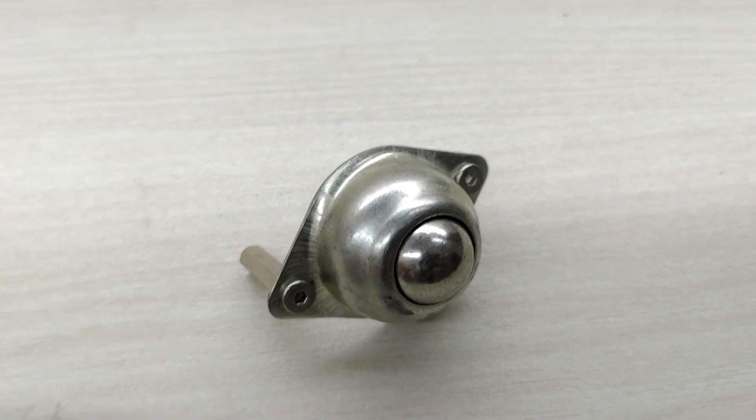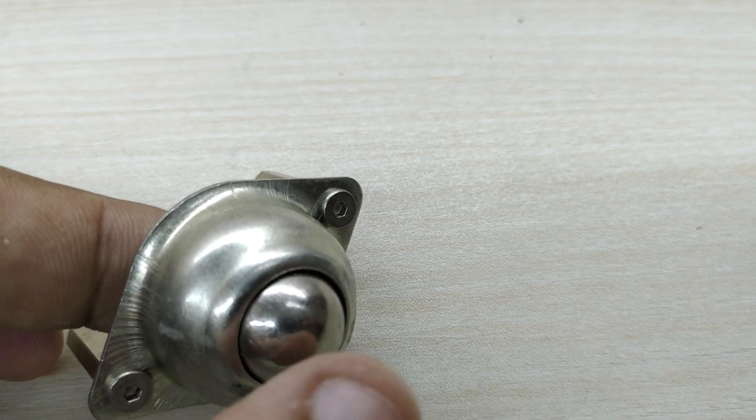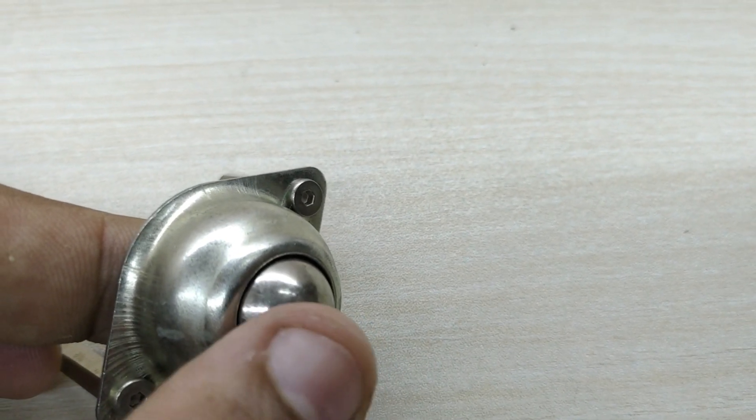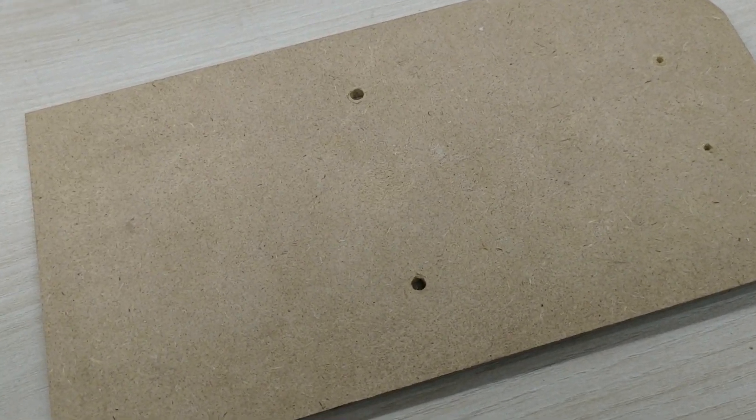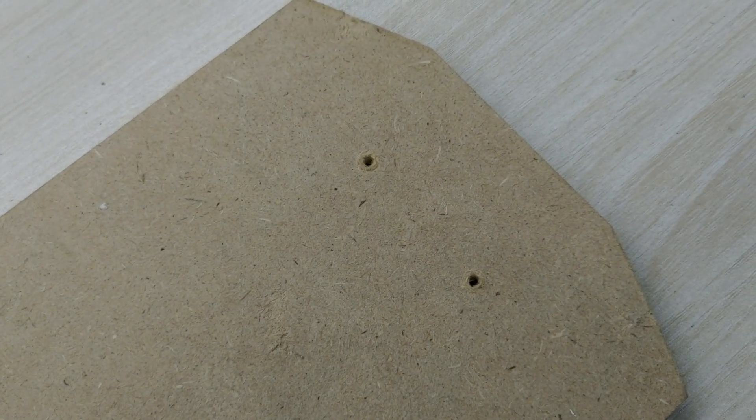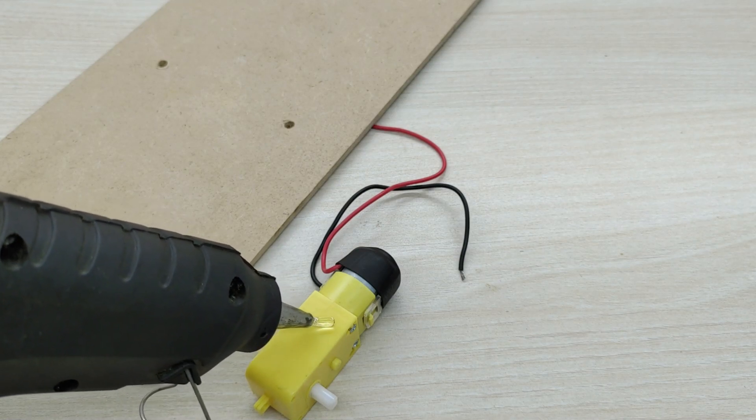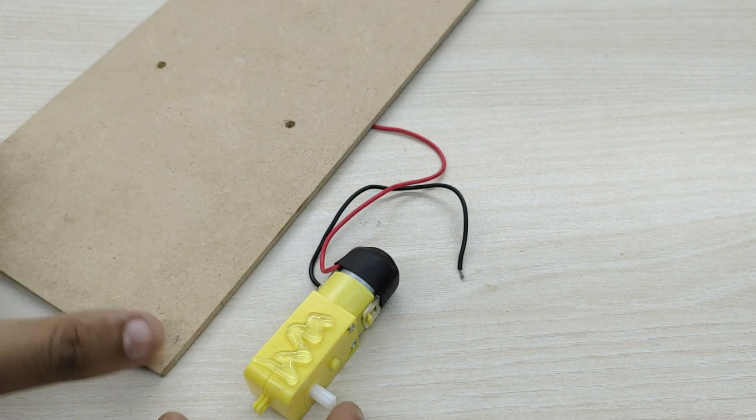The caster wheel has a ball inside it which can roll in any direction. First, take a plywood board and cut into the shape as shown. Also make two holes for the motor wires to pass through and also for fixing the caster wheel. The drawing template for the plywood is given in the description box.